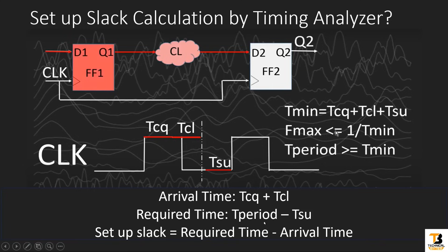But what is T-period here? T-period is not T-minimum. T-period is the time period specified in the Create Clock Constraint — one of the very important options in Create Clock Constraint is period, the period of the clock, and that period is taken here. The tool does not calculate T-minimum; we provide T-minimum through the Create Clock Constraint. We are asking the tool: as per the current placement and routing, whether my design will be able to work at this T-minimum. Setup slack will be equal to required time minus arrival time.